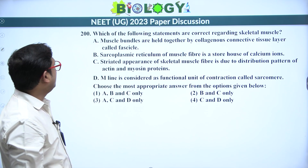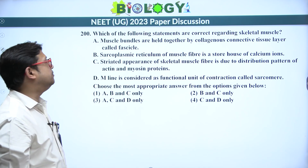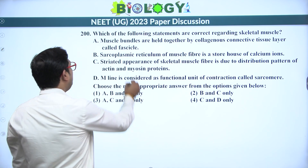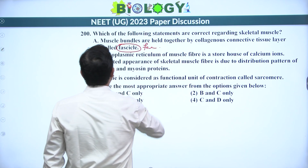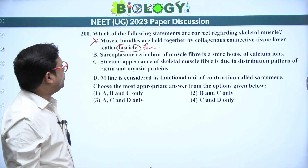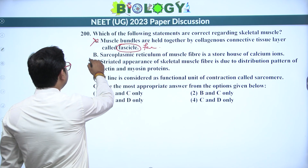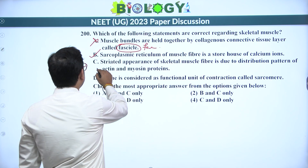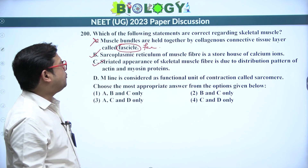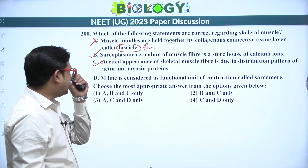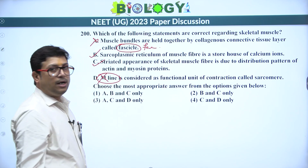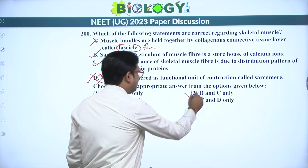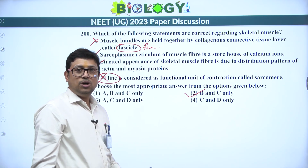Next: which statements are correct regarding skeletal muscles? Muscle bundles are held together by a collagen connective tissue layer called fascia — the question may say fascicle, but fascicle is the muscle bundle itself; fascia is the connective tissue layer — that statement is wrong. Sarcoplasmic reticulum of muscle fiber is a storehouse of calcium ions — true. The striated appearance of skeletal muscle fiber is due to distribution of actin and myosin proteins — true. The M line is the functional unit of contraction called sarcomere — wrong; sarcomere is the distance between two Z lines. Answer is 2.